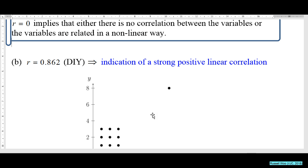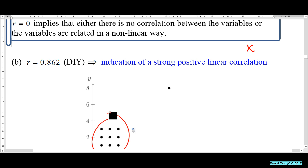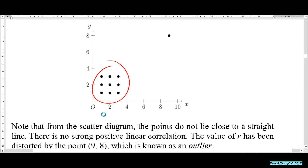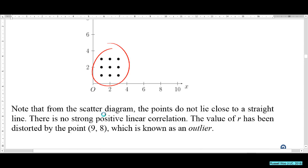So if you don't sketch the scatter diagram, you may wrongly assume there is a positive linear relationship — it could be a reading error in a science experiment. Without this outlier there is no relationship. The further the outlier is from the cluster, the larger r is and the closer r is to 1.